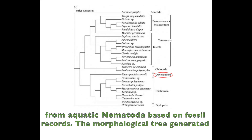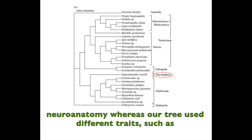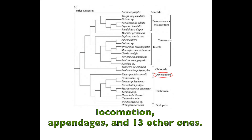The morphological tree generated in lab looks different than this published tree because the published tree focused on neuroanatomy, whereas our tree used different traits such as locomotion, appendages, and 13 other ones.